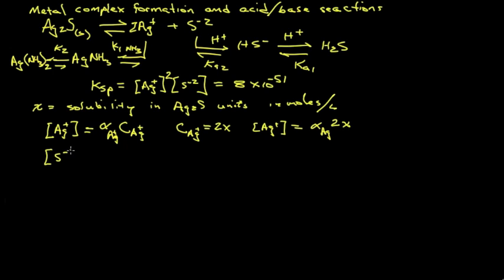In a similar manner, the sulfide is related to the total scorecard on sulfide, the sum of all the different forms. The one we're interested in is just a fraction of all the different forms, the sulfide in the dianine form. How does the total scorecard for the sulfide family relate to X? Well, every time one unit dissolves, I get one sulfide and it gets redistributed, but the total is still X. So sulfide can be expressed as just alpha for the sulfide times X.